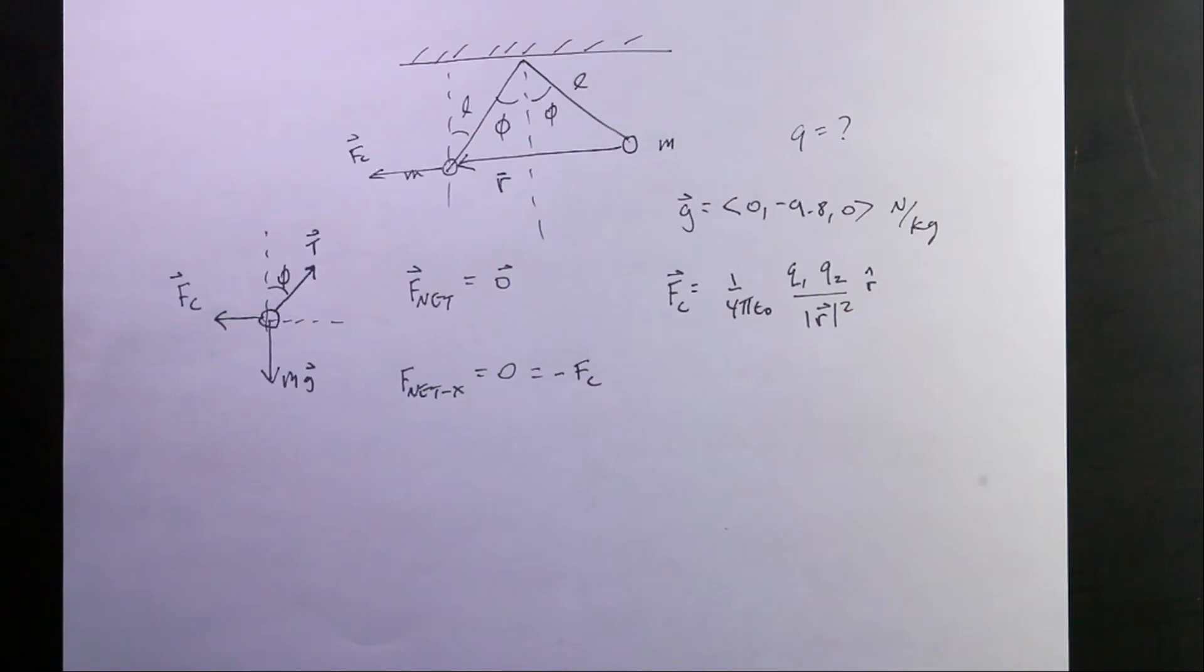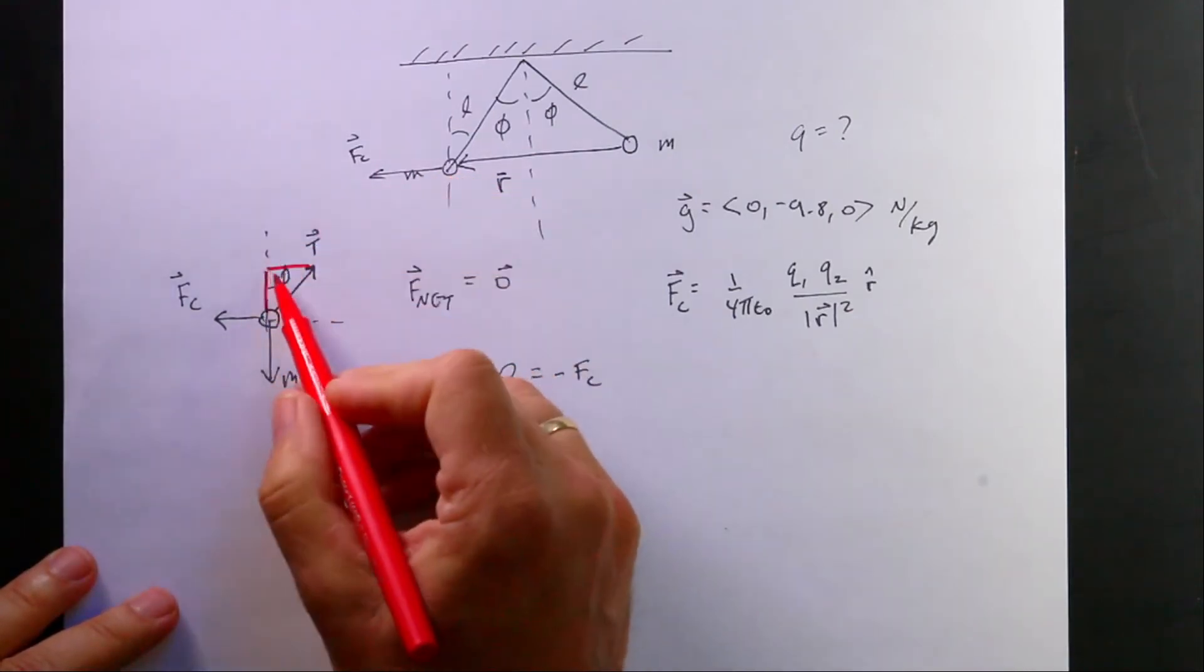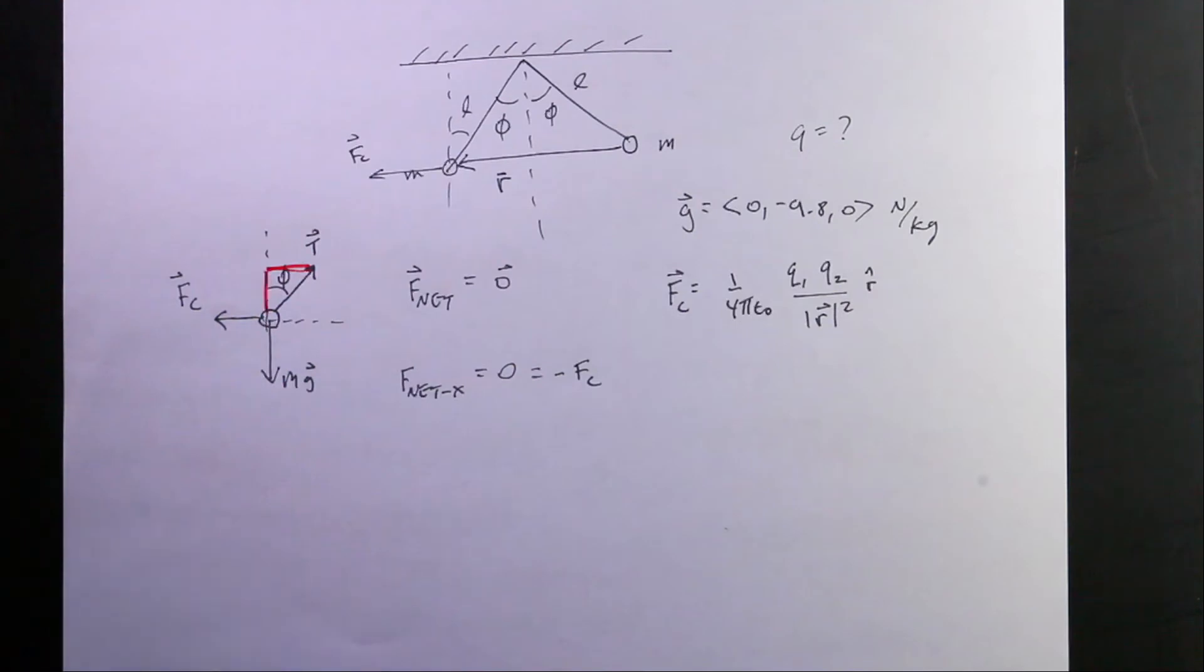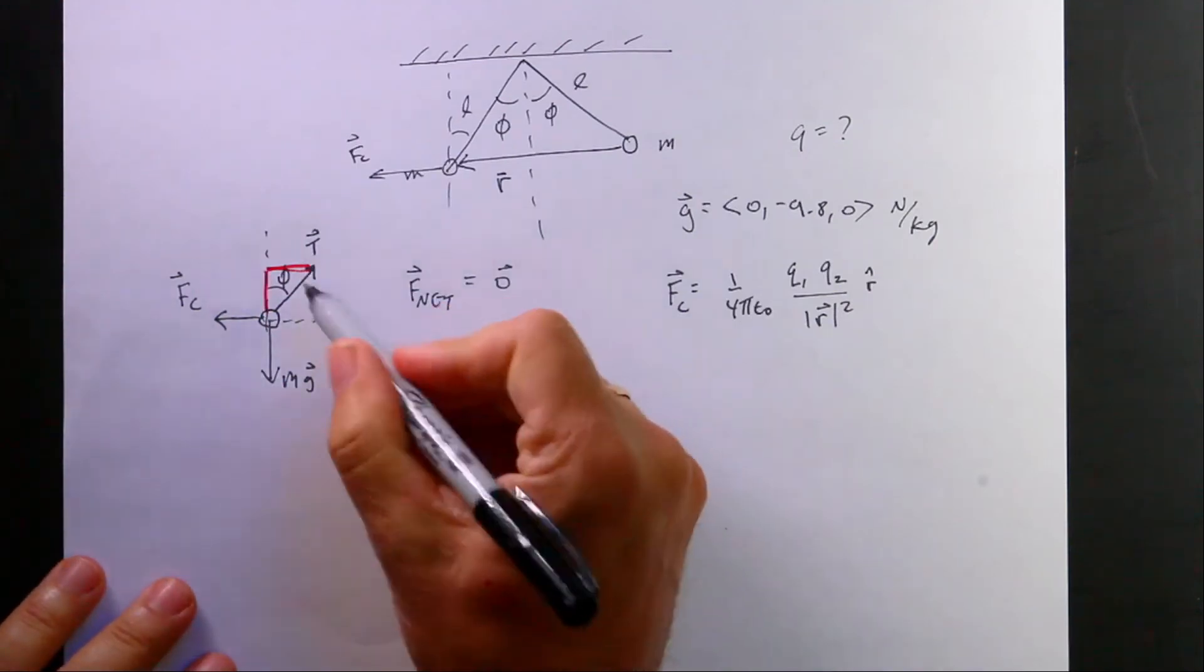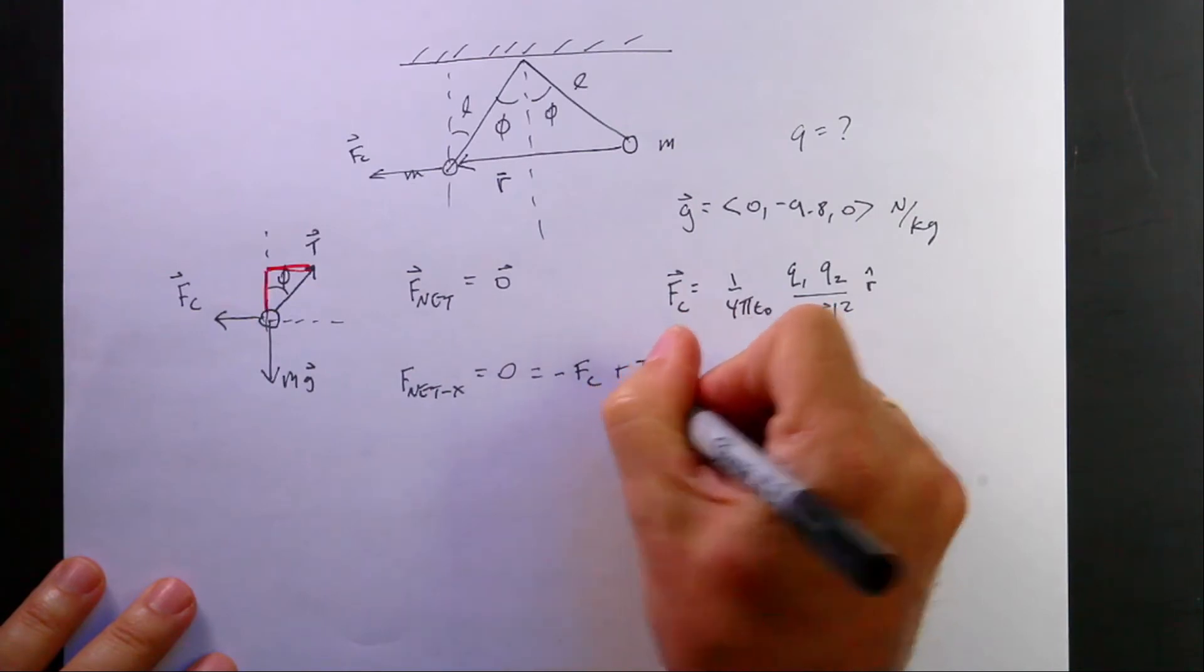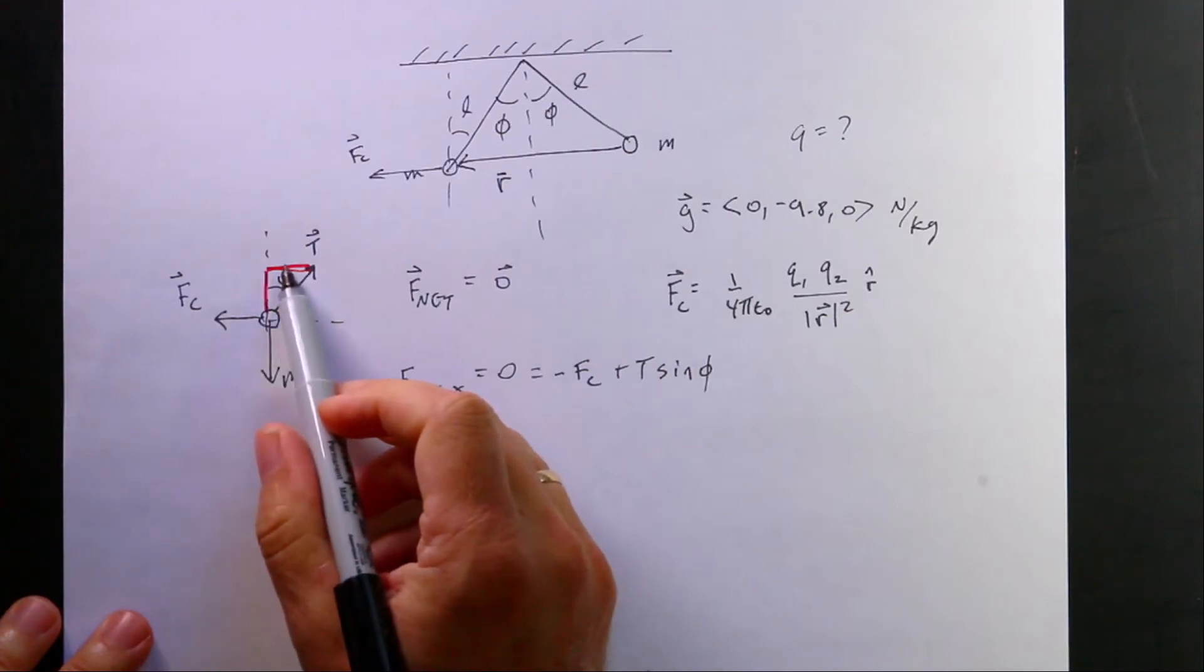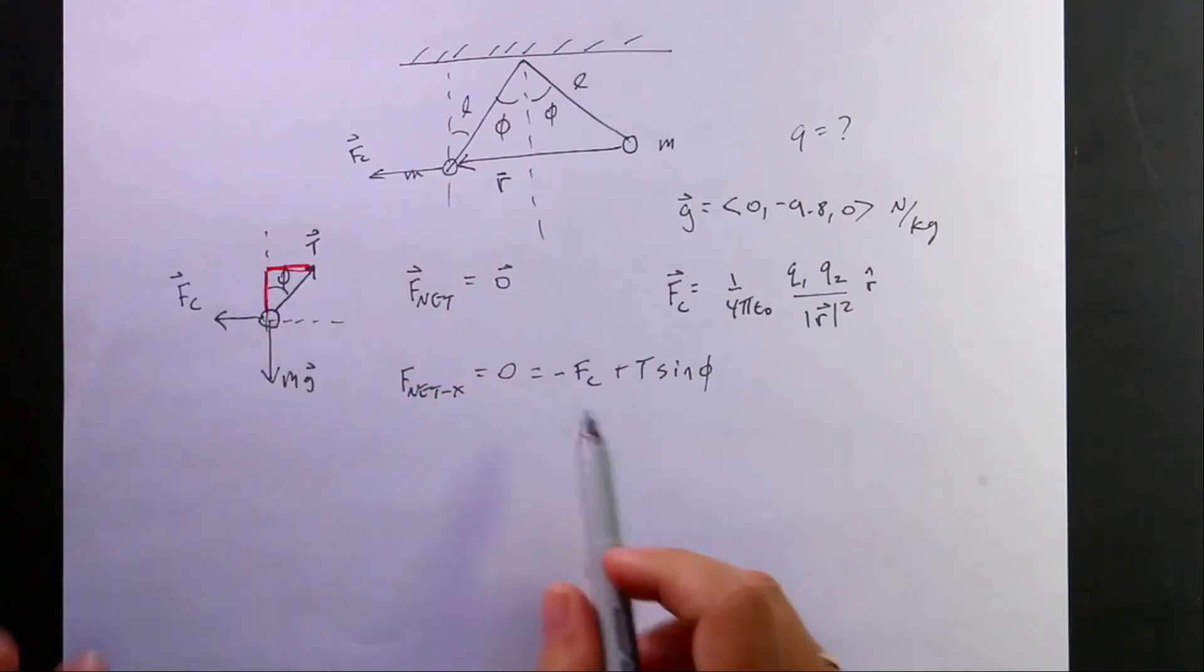So here is a right triangle. And this is the x component. So if the magnitude of the tension is T, then this is going to be equal to plus T sine of phi. Because sine of phi is opposite over hypotenuse, I can solve for that and I get this.